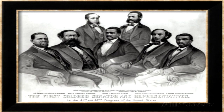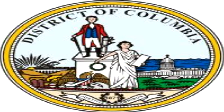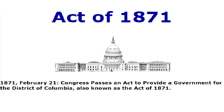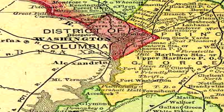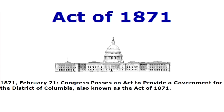I refer you to the Acts of the 41st Congress, Section 34, Section 3, Chapters 61 and 62. On this date in the history of our nation, Congress passed an act titled "An Act to Provide a Government for the District of Columbia." This is also known as the Act of 1871. It means that Congress, under no constitutional authority to do so, created a separate form of government for the District of Columbia, which is a 10-square-mile parcel of land.